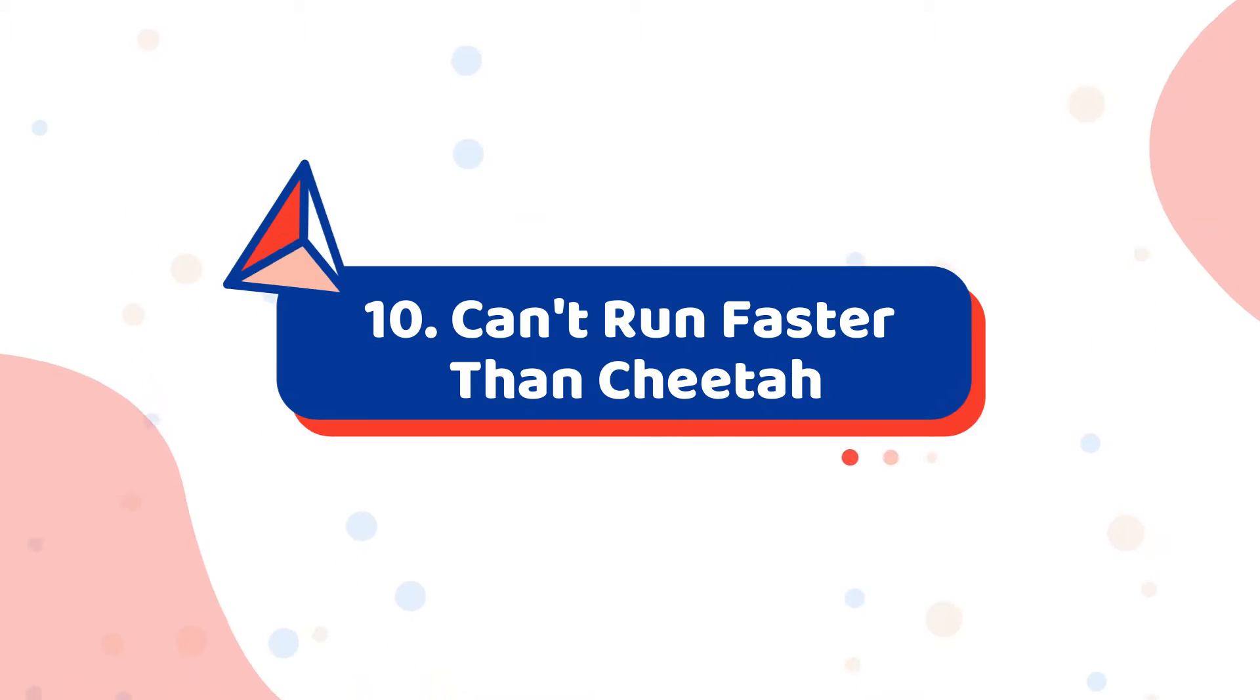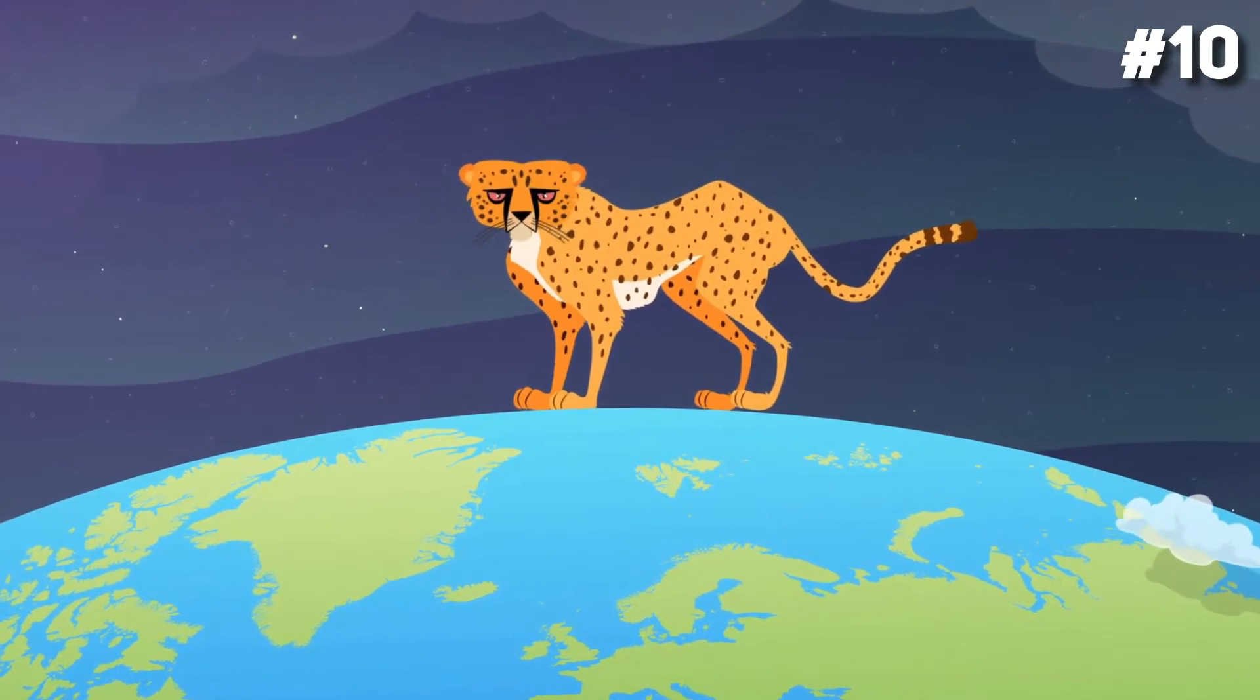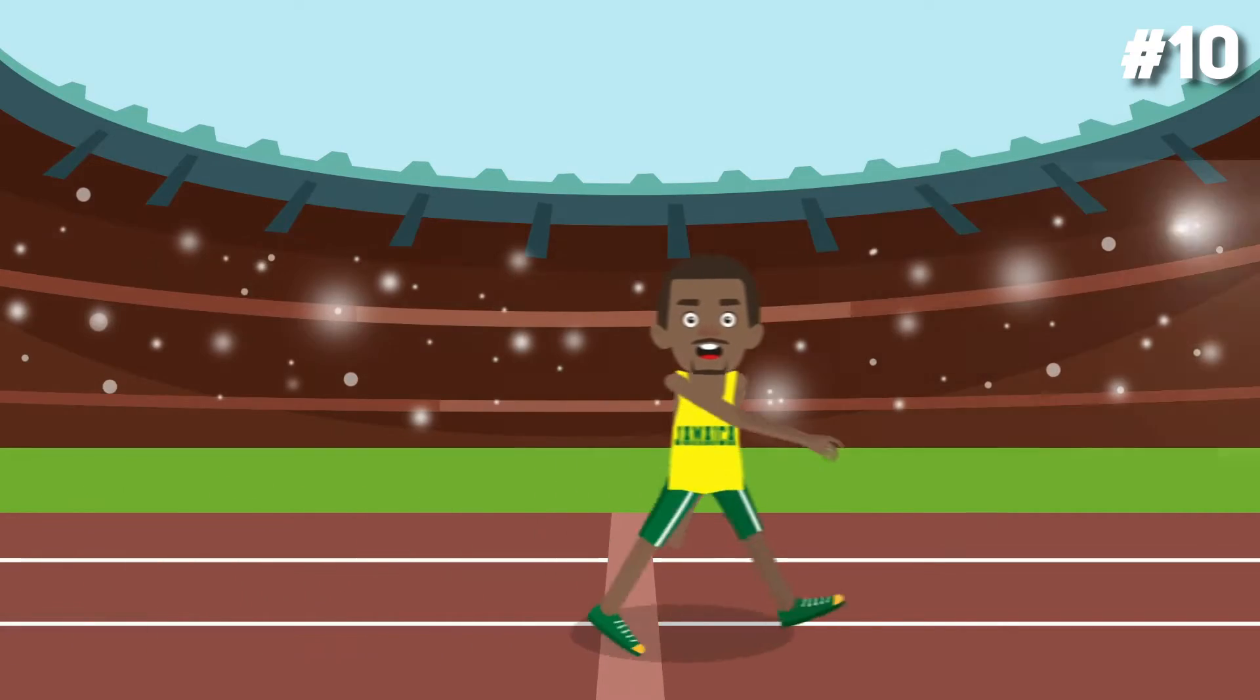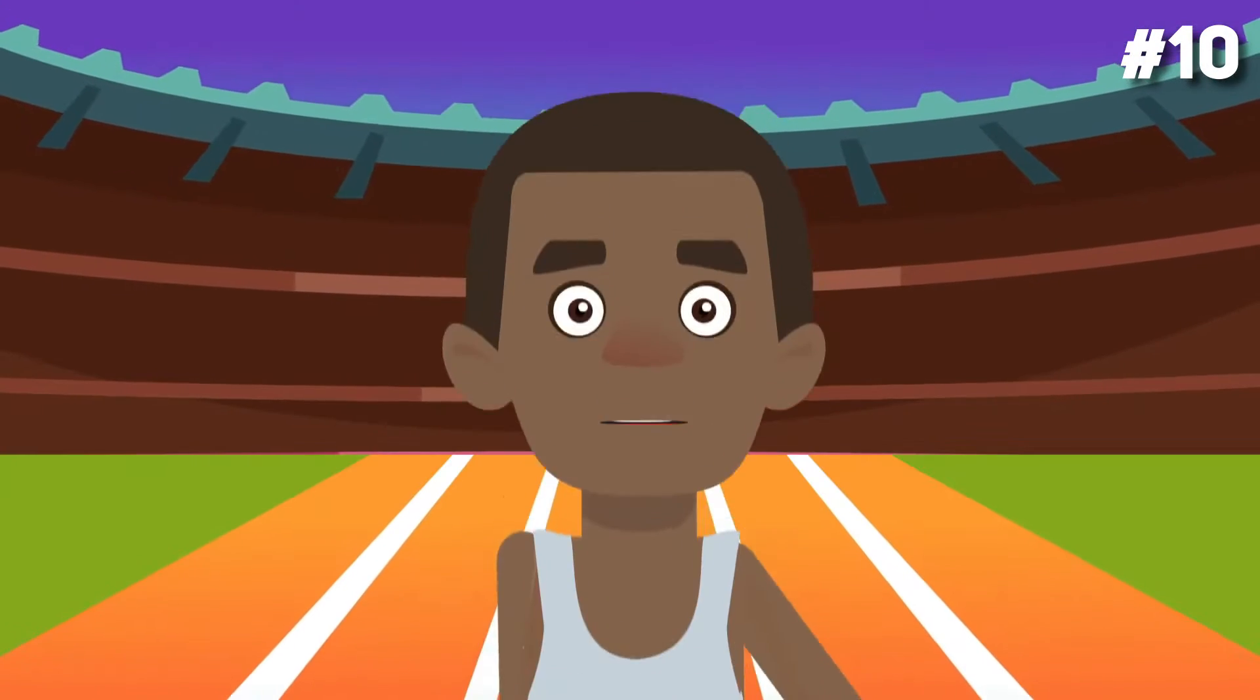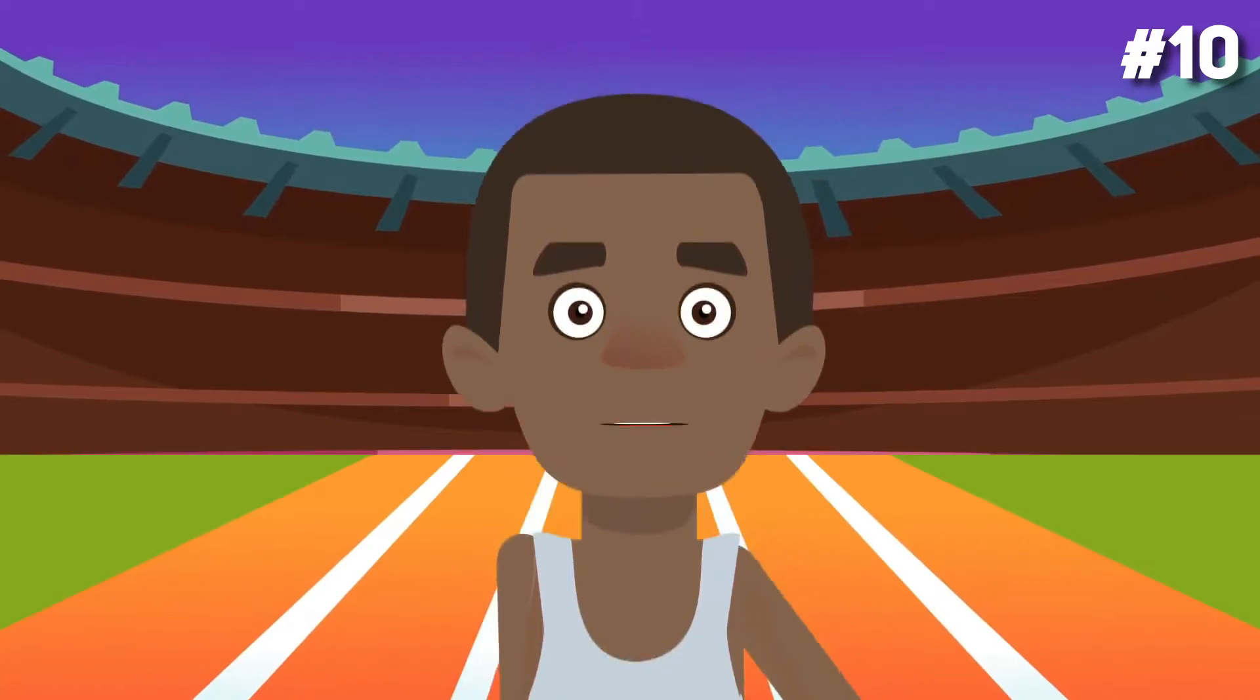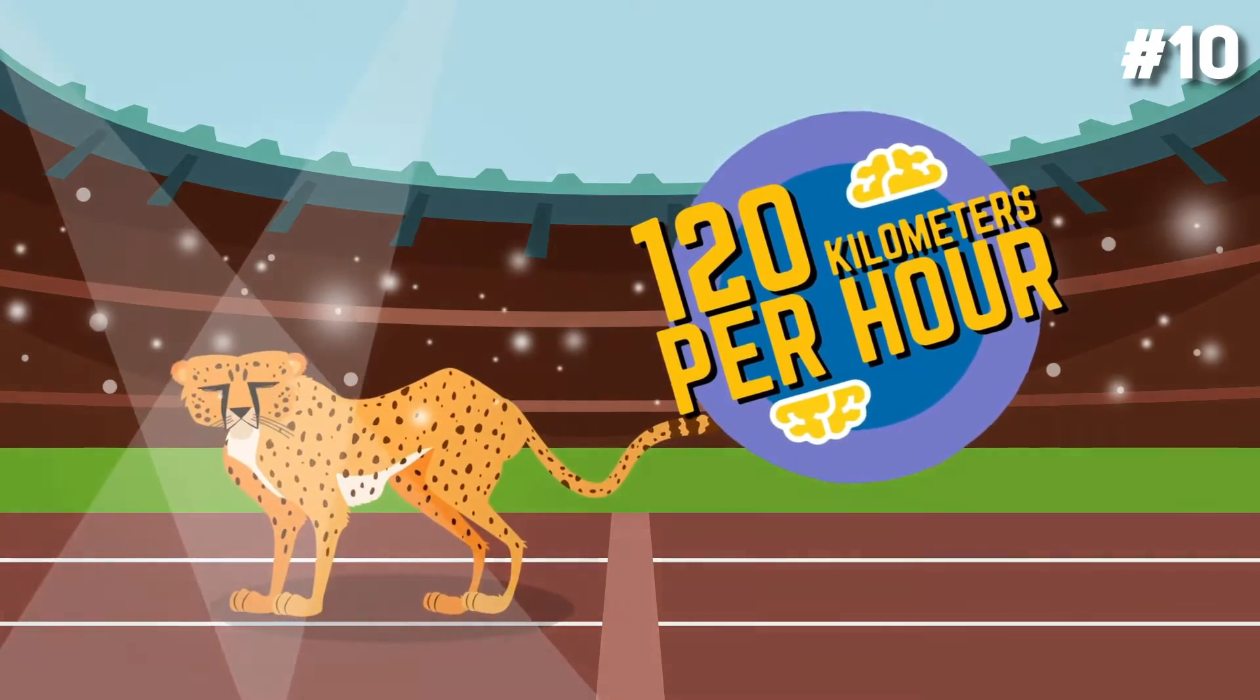First off, cannot run faster than cheetah. It's a known fact that a small population of a cat family can easily outrun any human being, even Usain Bolt himself. The fastest speed of Usain Bolt was rounded up to 45 km per hour. However, the cheetah in general can beat Usain Bolt as it can run up to 120 km per hour.